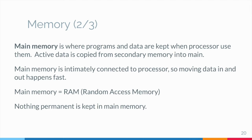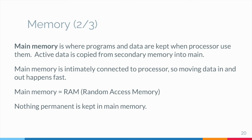Main memory is where programs and data are kept when the processor is actively using them. When programs and data become active, they are copied from secondary memory into main memory where the processor can interact with them — a copy remains in secondary memory. Main memory is intimately connected to the processor, so moving instructions and data in and out is very fast. Main memory is sometimes called RAM — Random Access Memory.